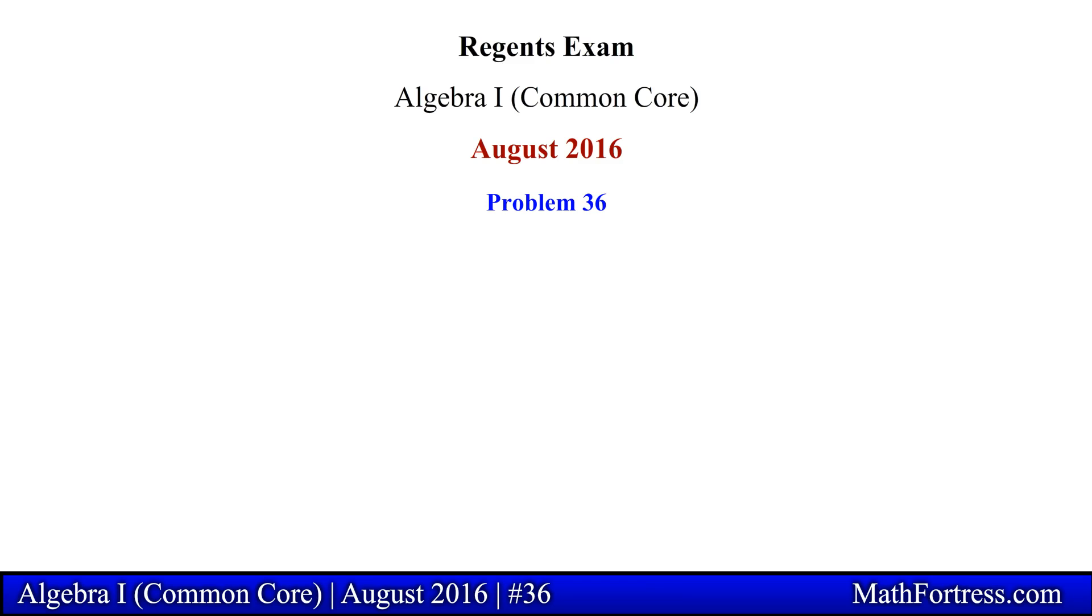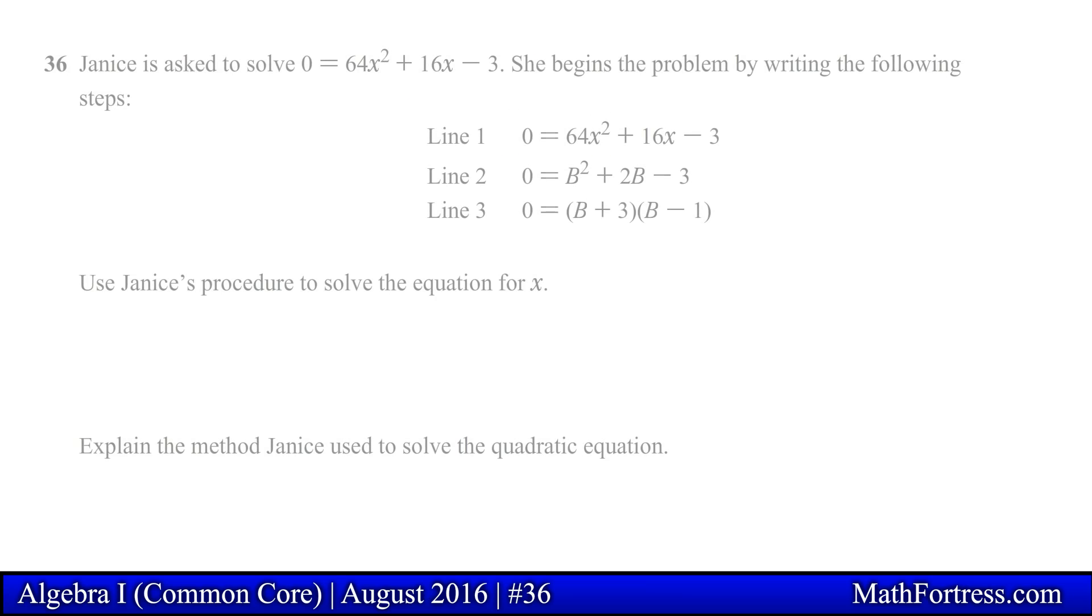Regents Exam, Algebra 1, August 2016, problem number 36. Janice is asked to solve 0 equals 64x squared plus 16x minus 3. She begins the problem by writing the following steps. Use Janice's procedure to solve the equation for x.